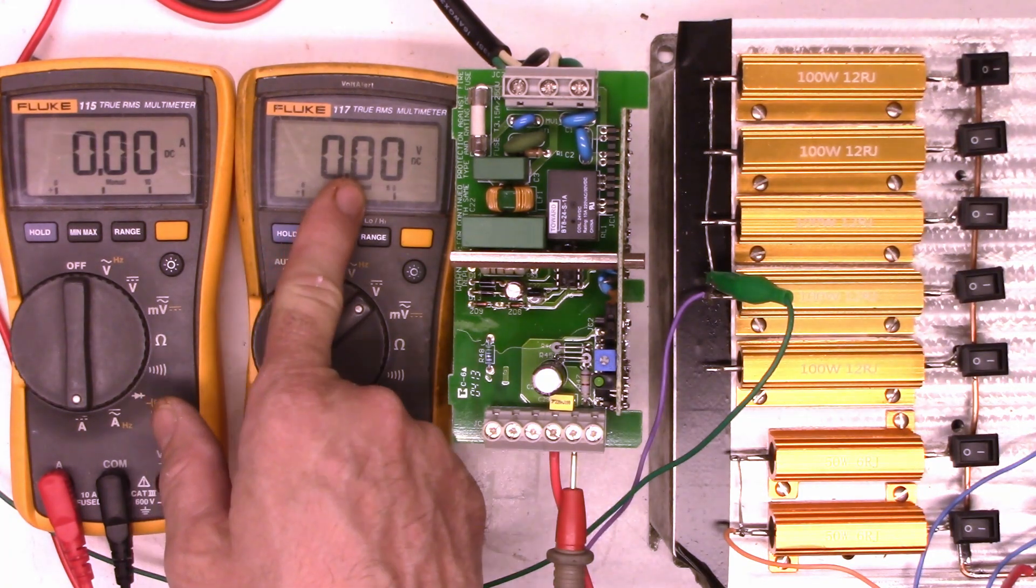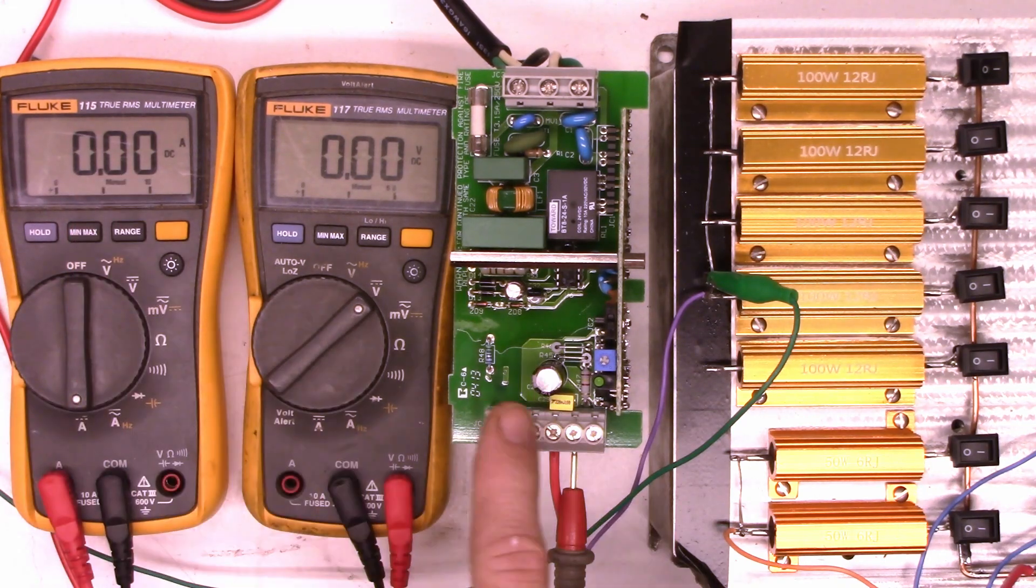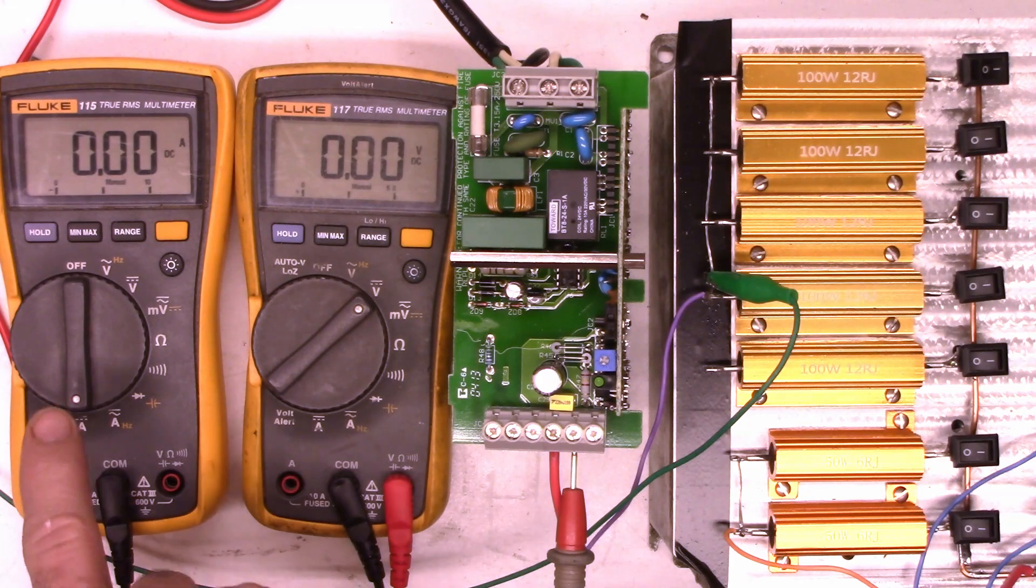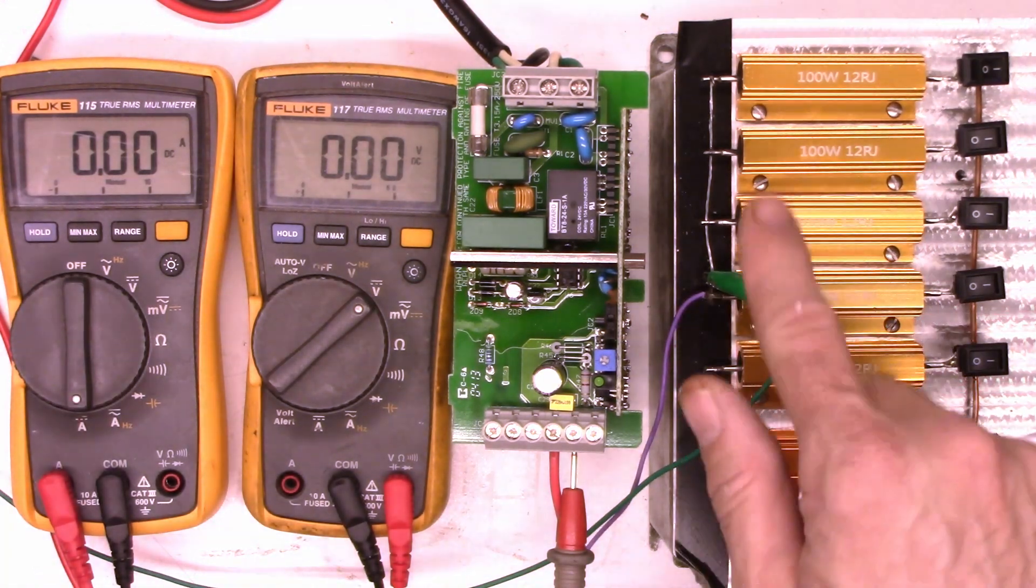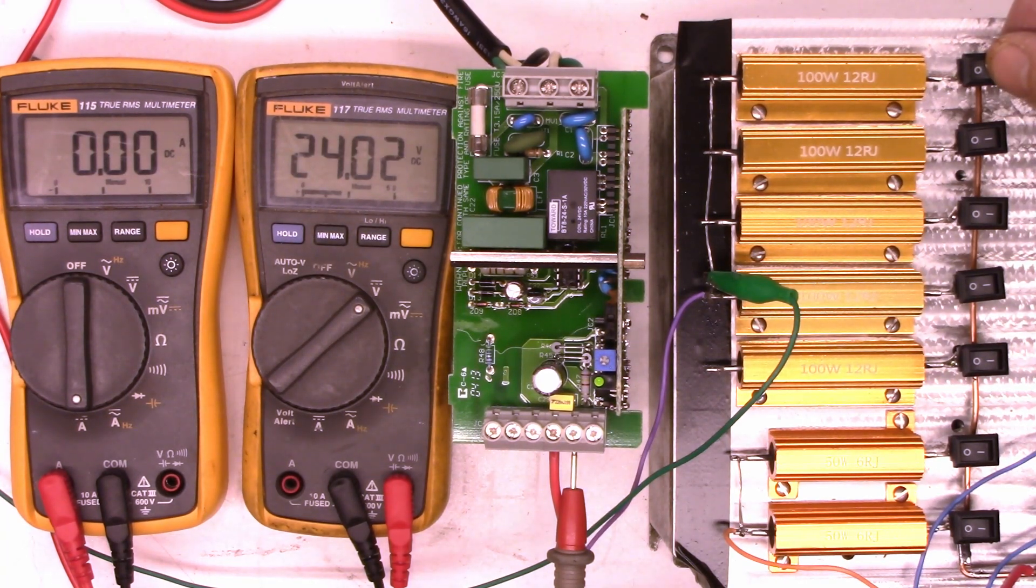Now this meter right here is measuring the voltage of the power supply. This meter over here is measuring the current of the power supply from the positive output to the meter, and then back to the dummy load over here. All these are off. Let's switch the power on. And so we see 24 volts. This should be close to 2 amps.